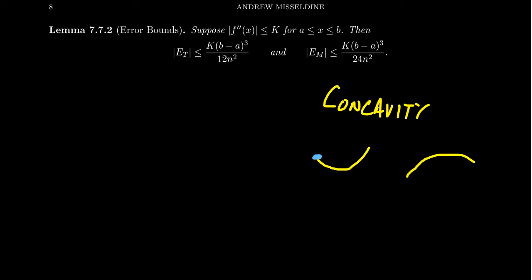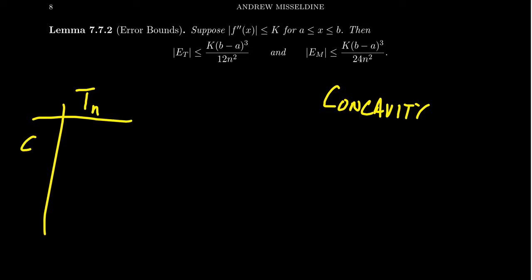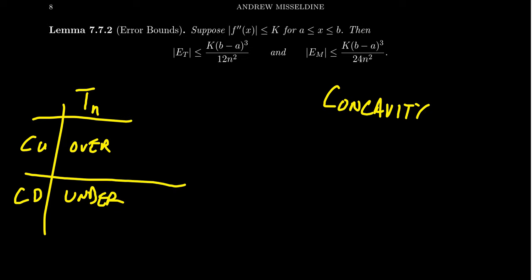To summarize: for the trapezoid rule Tn, when you are concave up, you're going to overestimate. When you're concave down, you're going to underestimate. What about the midpoint rule? It turns out it's very similar in nature, depending on whether you are concave up versus concave down.